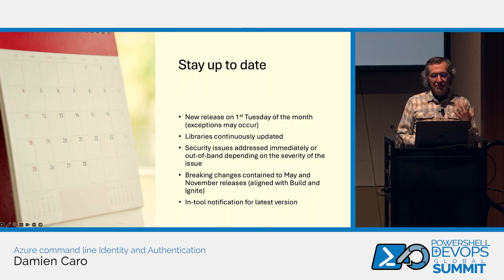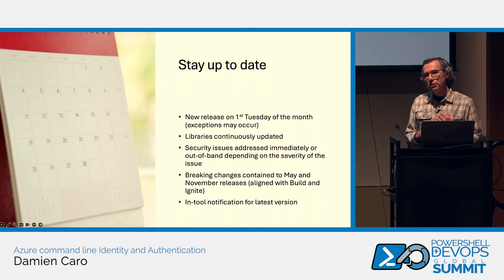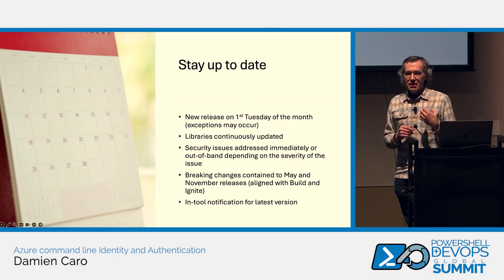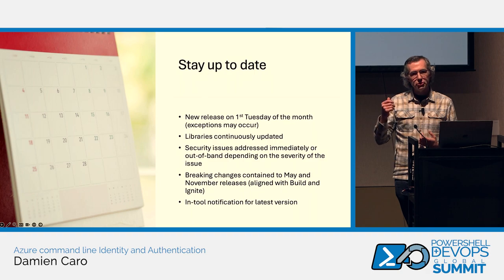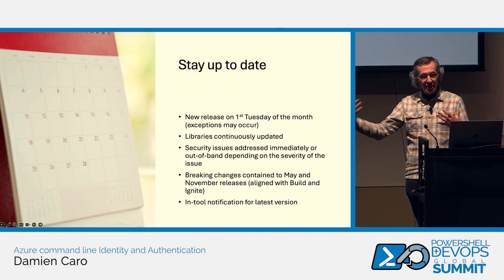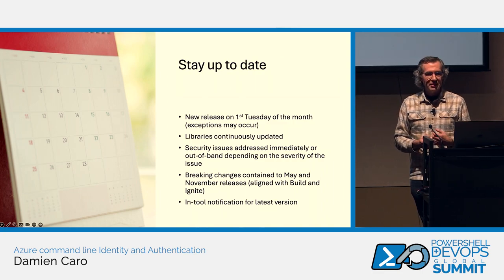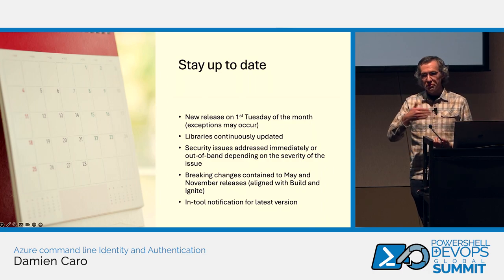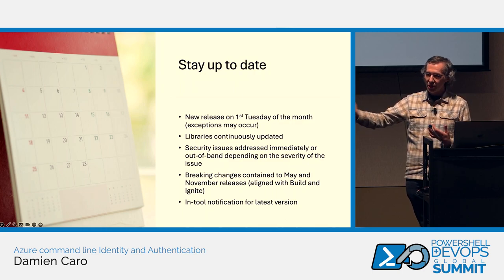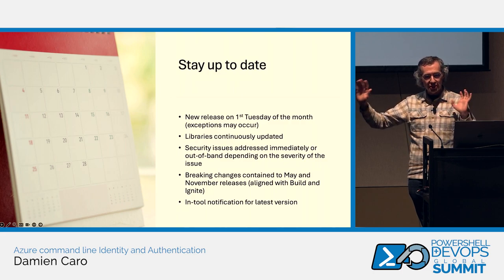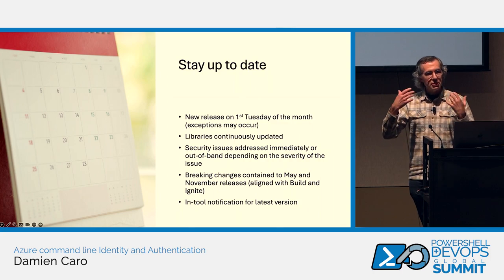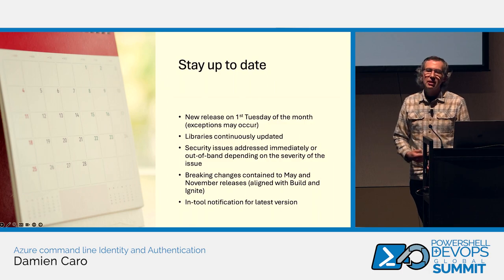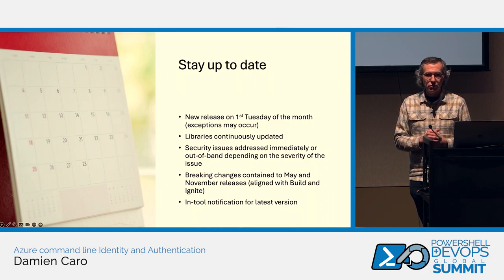One more announcement I'm previewing today: we're looking at announcing long-term support for Azure client tools at Build. The idea is that you could skip the November release and stay on the Build-generation release for a year. You'd still need to update for non-breaking changes to keep scripts current, but you wouldn't need to take the November breaking change release — you could stay on that generation until the following Build. This gives you a longer period and more flexibility to maintain your scripts.